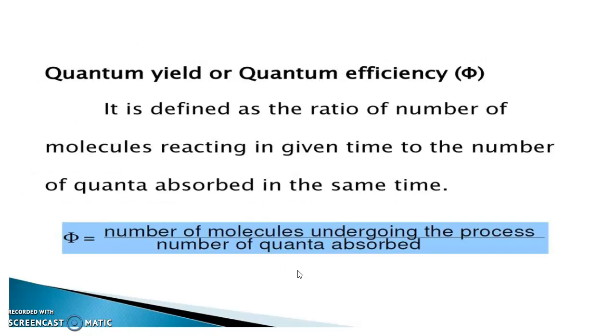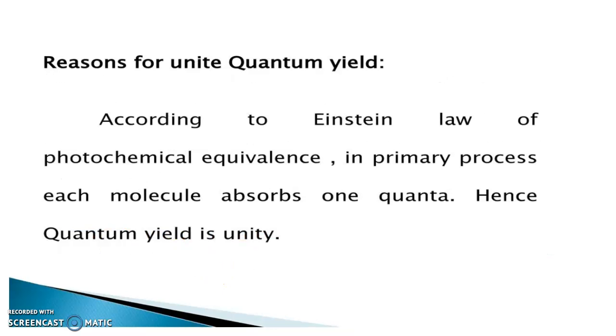Next, we have a definition of quantum yield, which is also called quantum efficiency. It is defined as the ratio of number of molecules reacting in a given time to the number of quanta absorbed in the same time. That is, phi is equal to number of molecules undergoing the process divided by number of quanta absorbed.